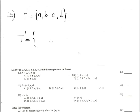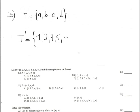Problem 20: the set is formed by A, B, C, D, and we need to find the T complement. The T complement consists of elements inside the universal that are not inside T. So we get 1, 2, 4, and 5 as numbers. For letters, the only ones inside the universal but not inside T are S and E. This answer corresponds with option B.